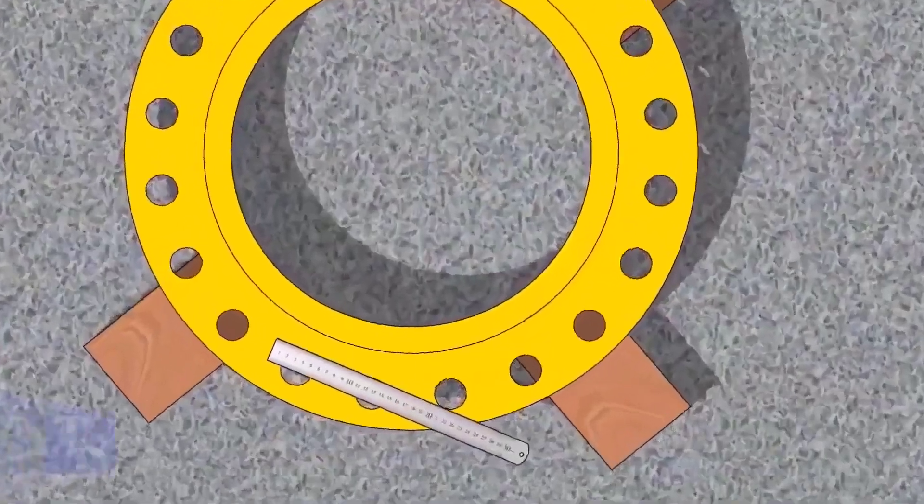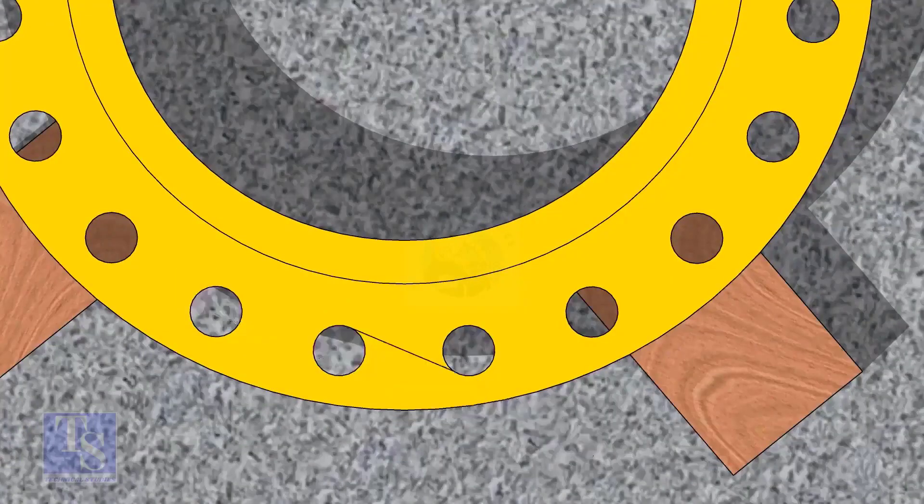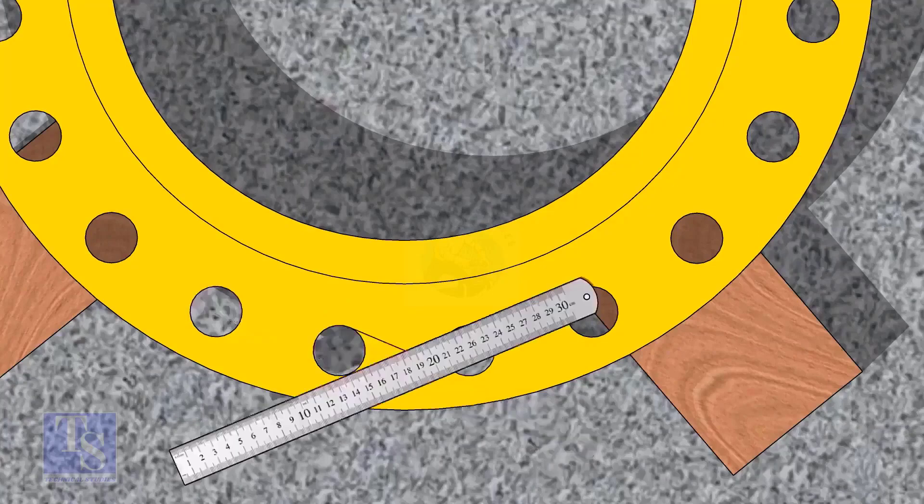Let us mark the center line of the flange. Draw tangential lines of two adjacent holes. The intersection of the lines is the center of these holes.